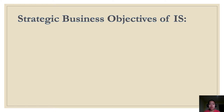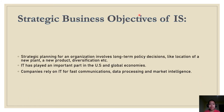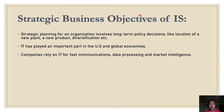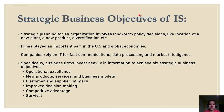For the strategic business objectives of information systems: strategic planning for an organization involves long-term policy decisions like location of a new plant or a new product diversification. Information technology has played an important part in U.S. and global economies — companies rely on it for communications, data processing, and market intelligence. Specifically, business firms invest heavily in information technology to achieve six strategic business objectives.